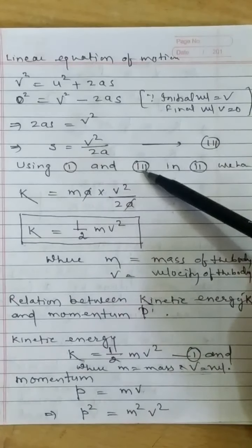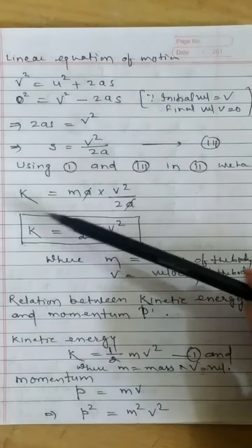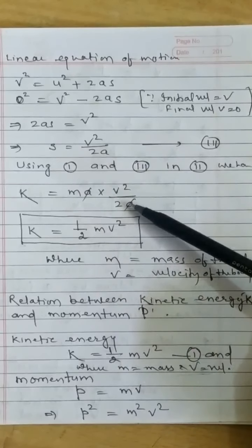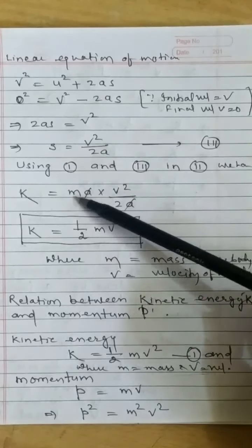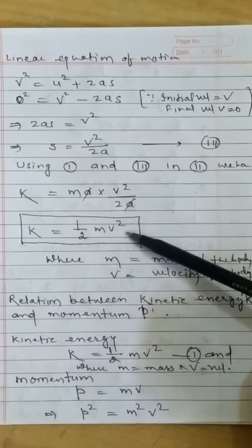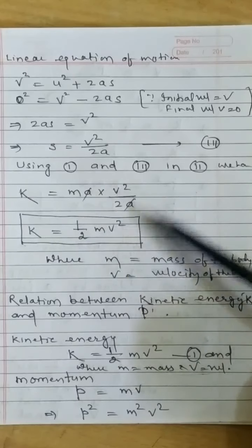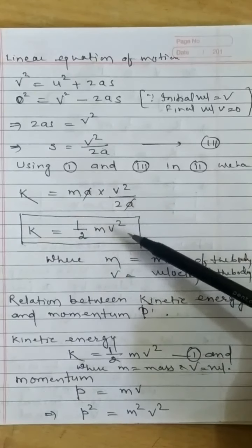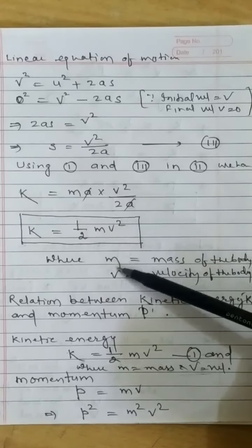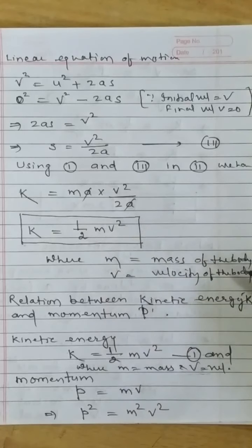Using equations 1 and 3 in equation 2: Kinetic energy K = F × S = MA × (V² / 2A). The A cancels, giving K = ½MV². This is the expression for kinetic energy: K = ½MV², where M is mass and V is velocity of the body.